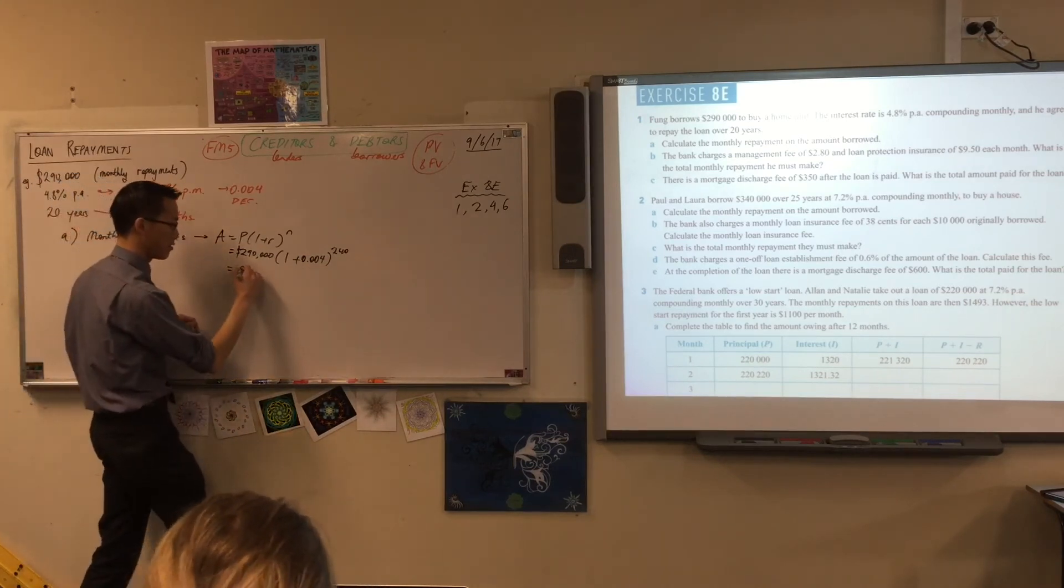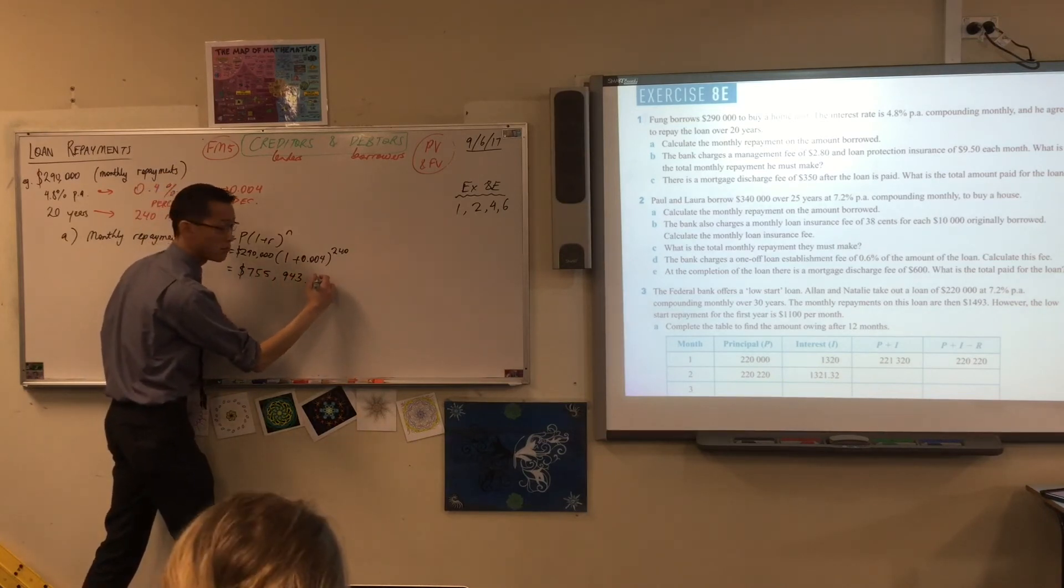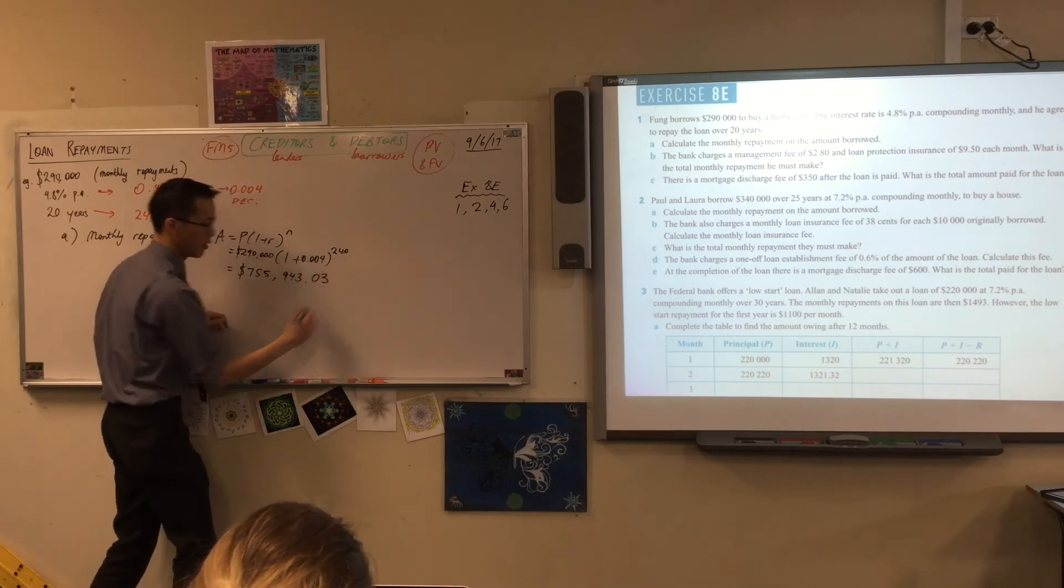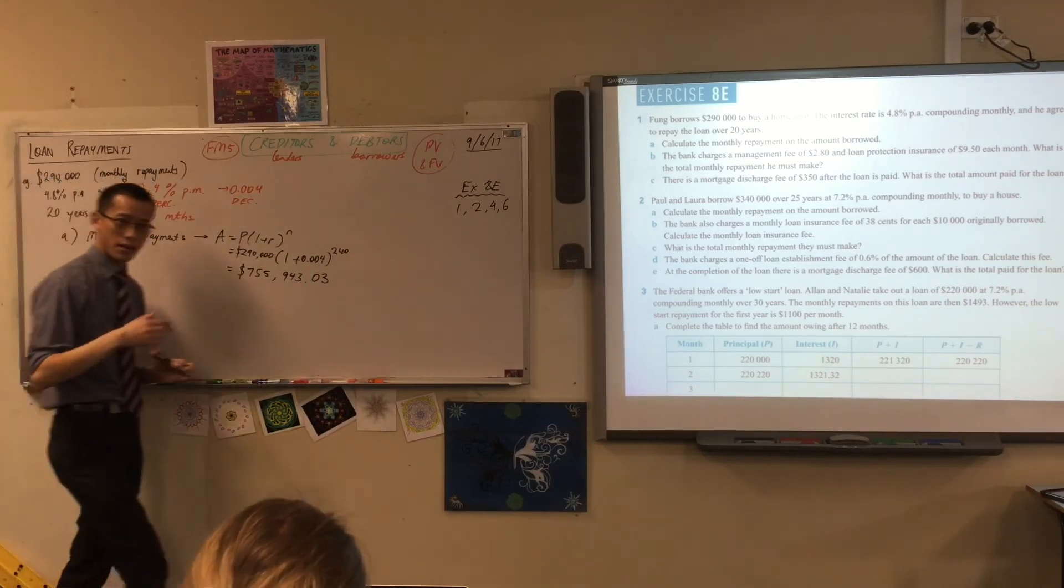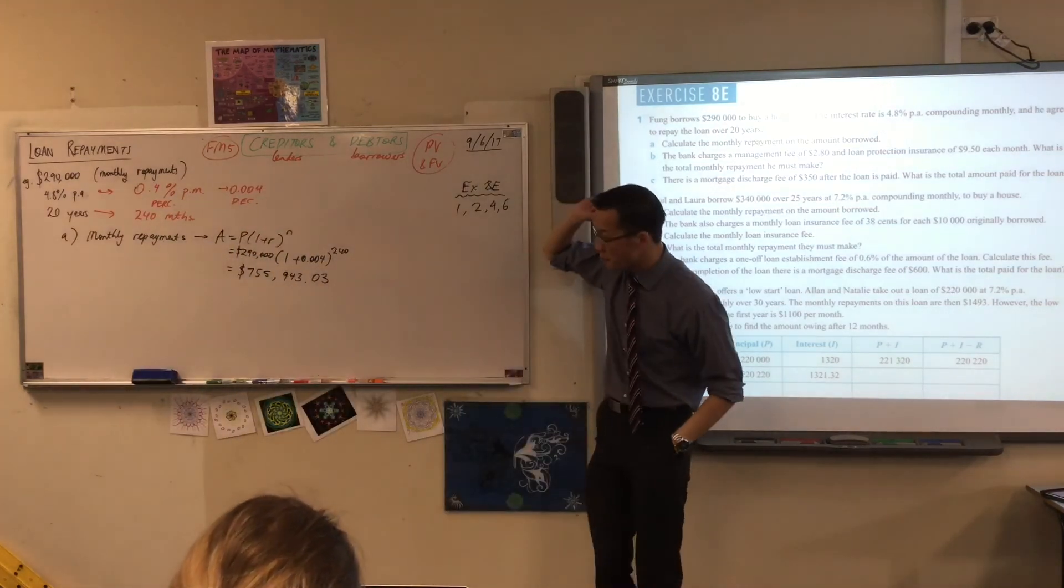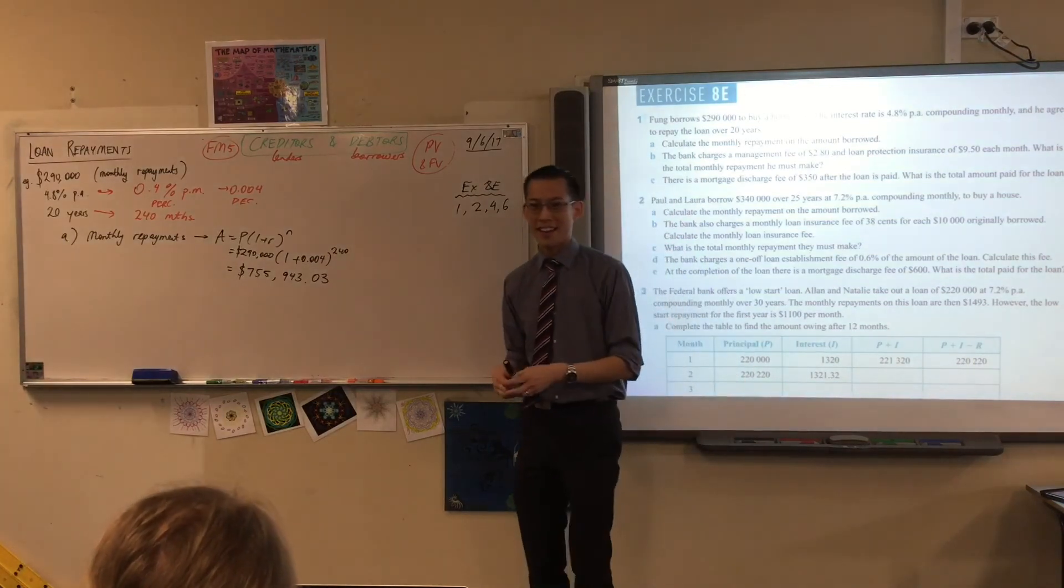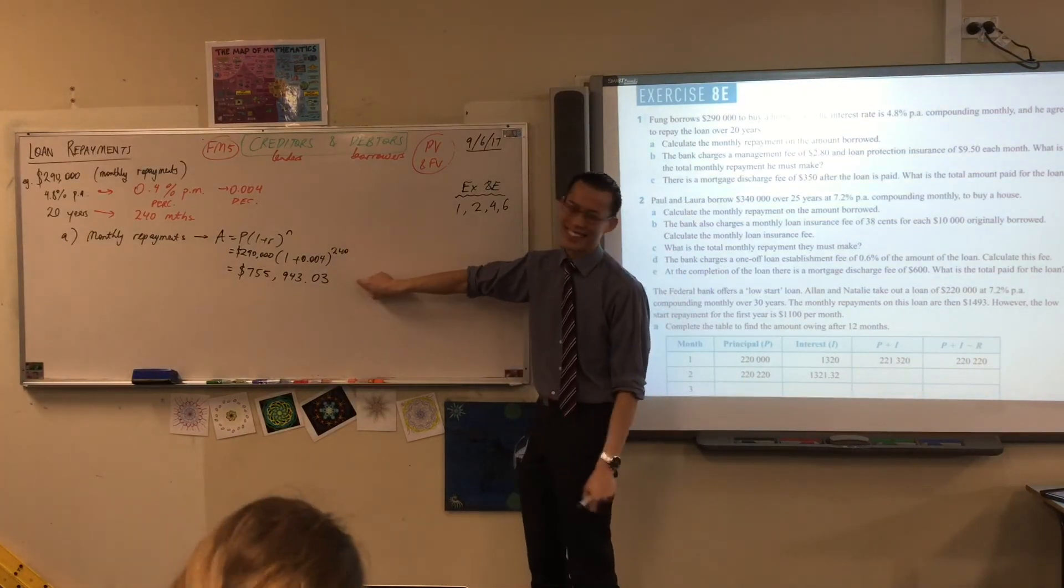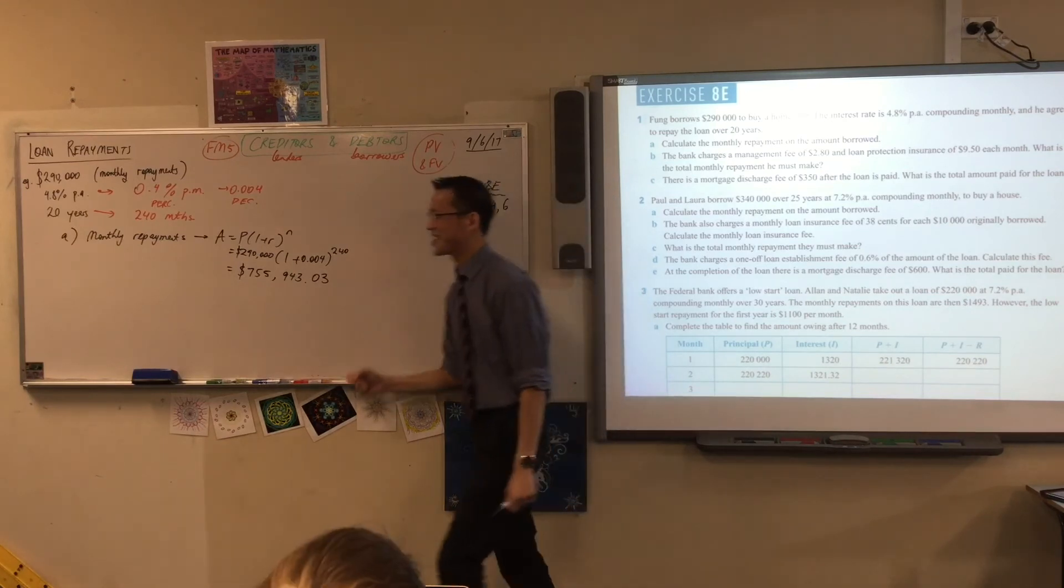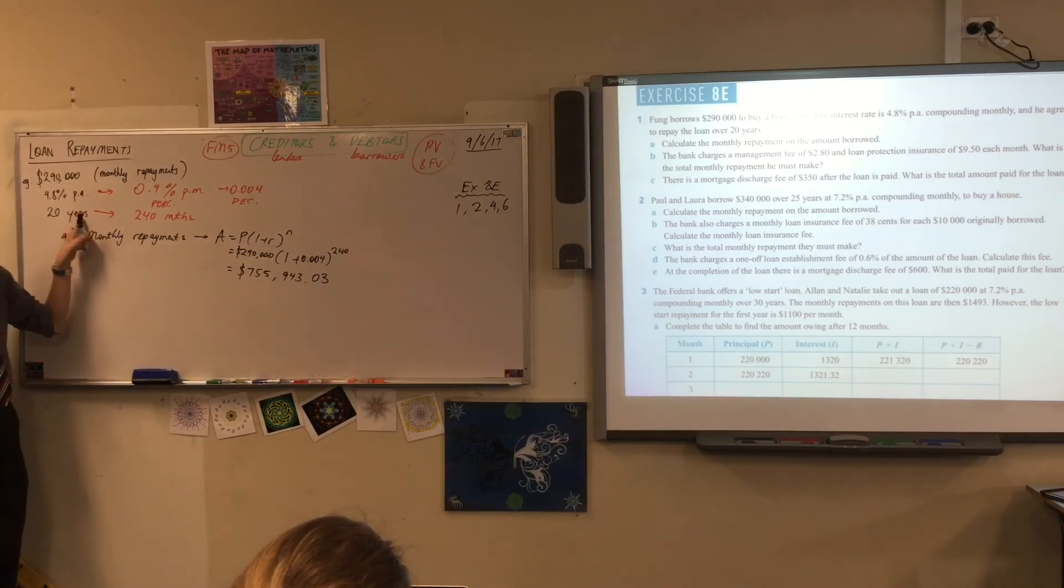Now go reach for your calculator. You're going to get a number out of this and it's quite large, right? What is it? $755,000 and some cents. Now just pause before we progress any further. That number is big. That number is more than double what he's actually borrowing, right? But yes, that's right. It still isn't going to get you very far in Sydney, so this is big.